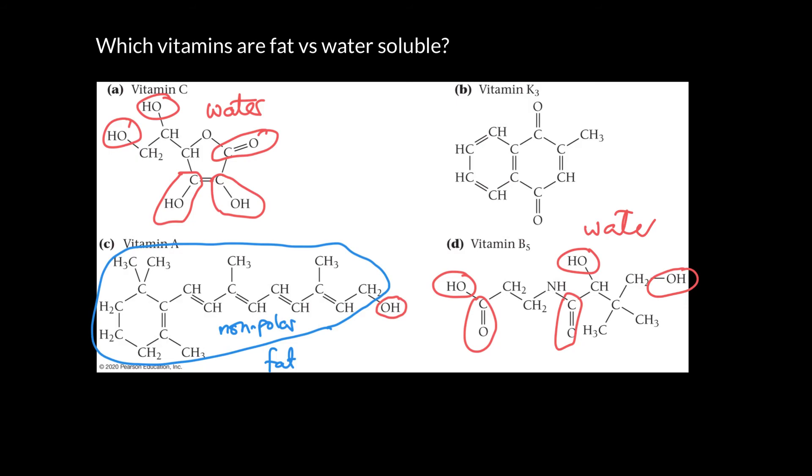And again, if we look at vitamin K3, we can look at this and we can say, well, most of that molecule is pretty non-polar. You've got carbon and hydrogen bonds. Again, you've got a couple of regions that are polar, but I would say since most of that molecule is non-polar, it's probably going to be a fat-soluble vitamin. So the top left and the bottom right are water-soluble, and the top right and the lower left are going to be fat-soluble.